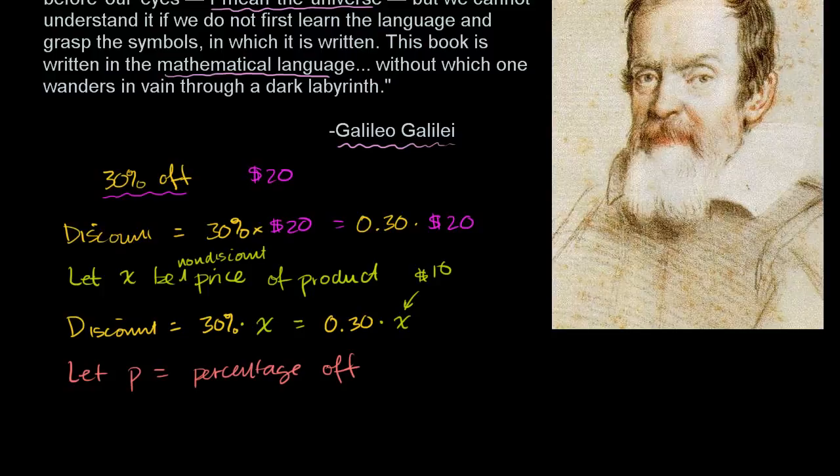Now what can we do? Well, now we can say that the discount is equal to the percentage off. In these other examples, we were picking 30%, but we can say now it's P. It's the percentage off, P, times the product in question, times the price, the non-discount price of the product in question. Well, that was X. The discount is equal to P times X.